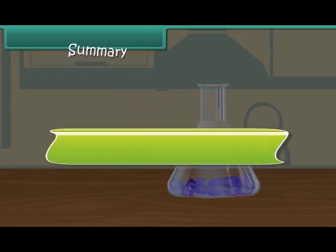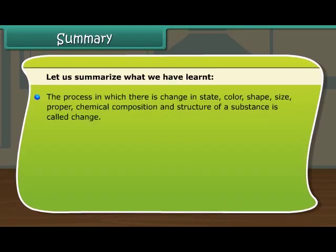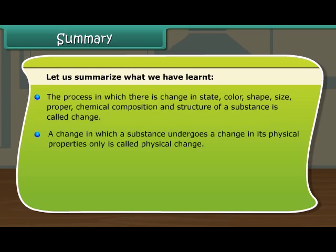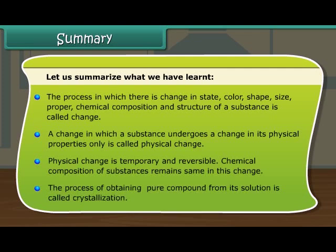Summary. Let us summarize what we have learned. The process in which there is a change in state, color, shape, size, chemical composition, and structure of a substance is called change. A change in which a substance undergoes a change in its physical properties only is called a physical change. Physical change is temporary and reversible, and the chemical composition of substances remains the same. The process of obtaining a pure compound from its solution is called crystallization.